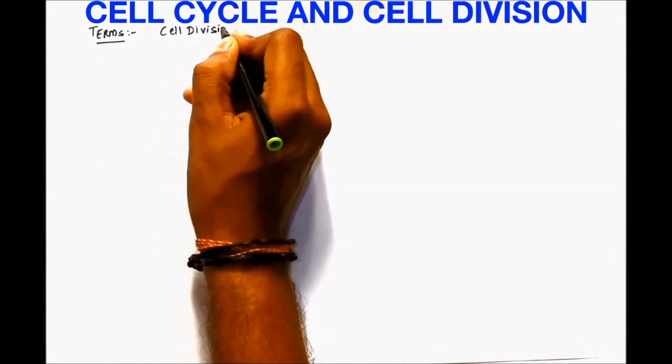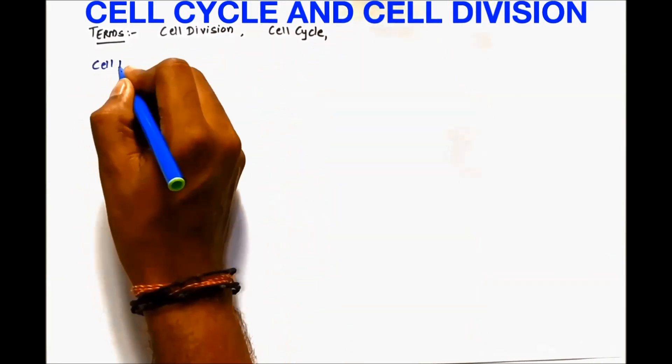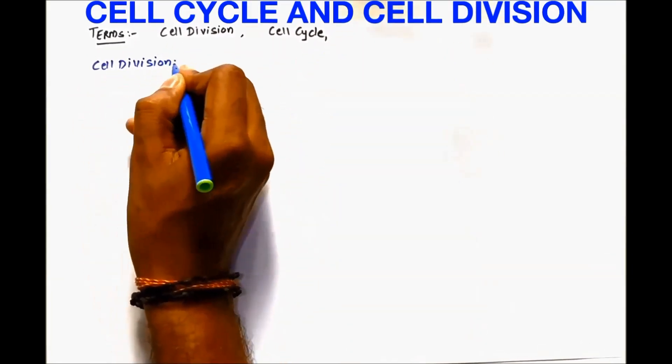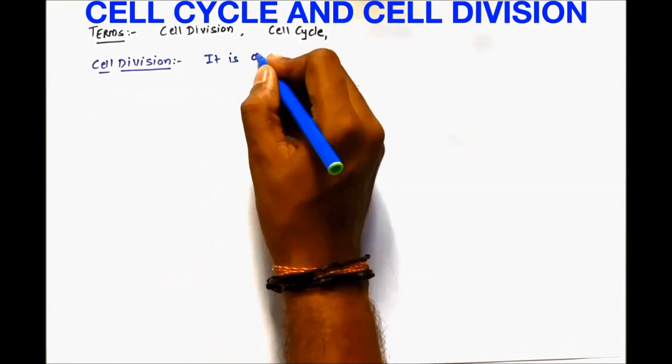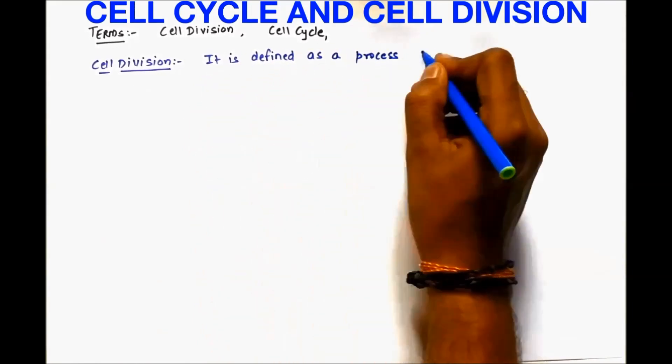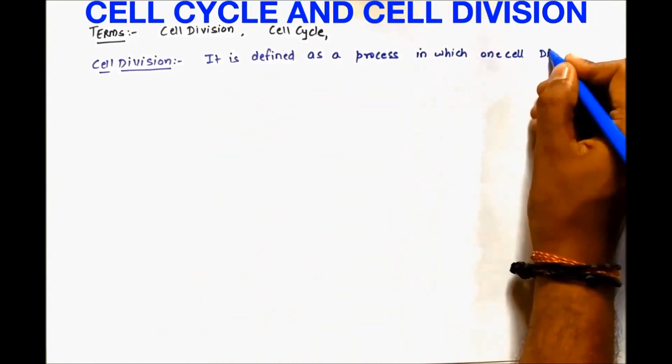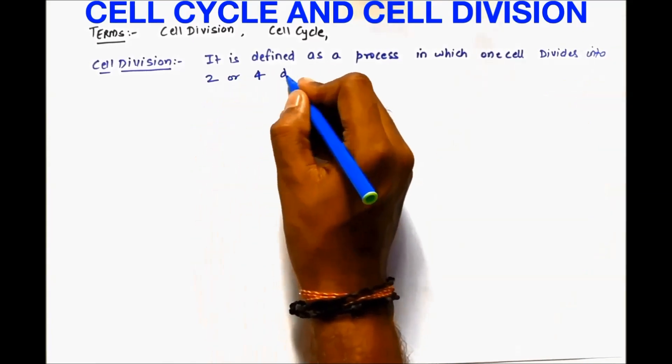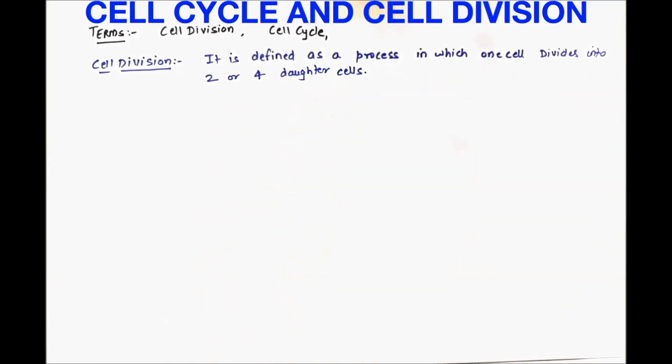This video is related to cell cycle and cell division concepts with respect to the NEET exam, and it is the first part of the video. Let us start. The terms we need to understand are cell division and cell cycle. Cell division is defined as a process in which one cell divides into 2 or 4 daughter cells.